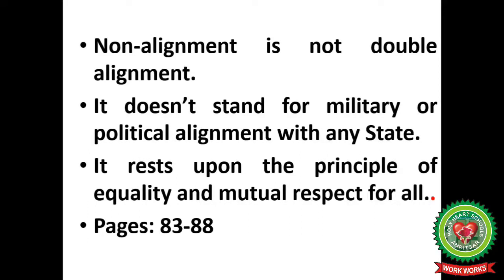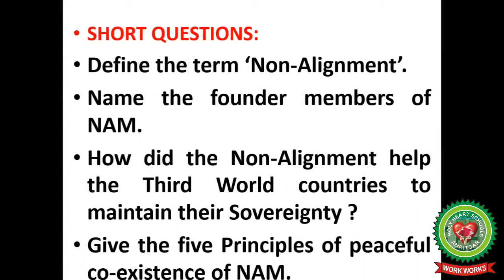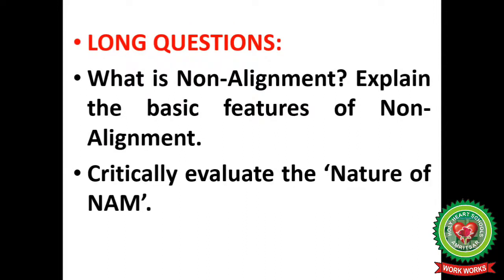This finishes the discussion of today's topic: the nature of non-alignment. You will read pages 83 to 88. Now I will discuss topic-related questions. Short questions: define the term non-alignment; name the founder members of NAM; how did non-alignment help third world countries maintain their sovereignty; give the five principles of peaceful coexistence of NAM. Long questions: what is non-alignment; explain the basic features of non-alignment; critically evaluate the nature of non-alignment. You will watch the video again and do the snap homework question.